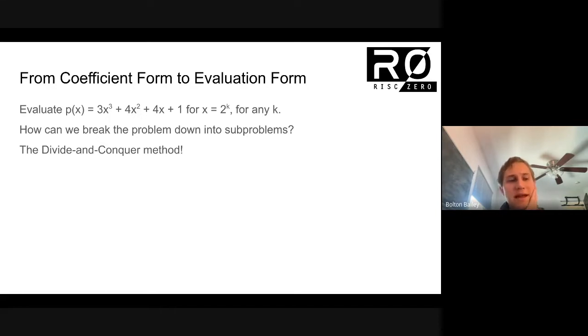The divide and conquer method tells us that if you have a problem, you should try and break it up into similar problems, but of a smaller size. So our problem is this polynomial with four components. How can we break that up into solving the same problem for polynomials with fewer coefficients?